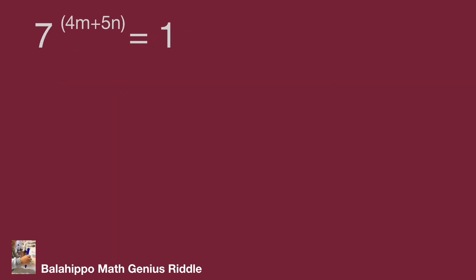1 equals 7 to the power of 0. So 4m plus 5n equals 0.